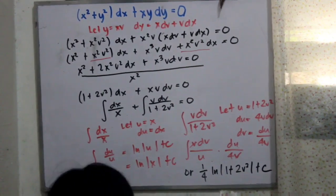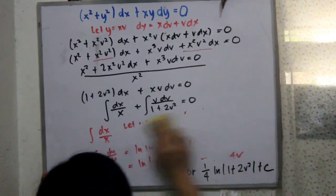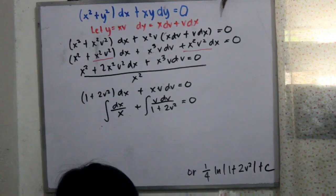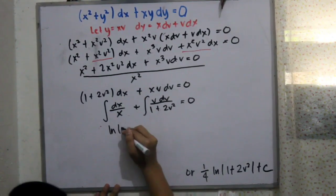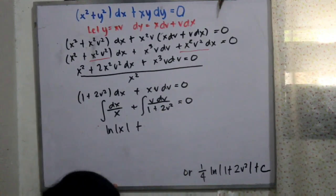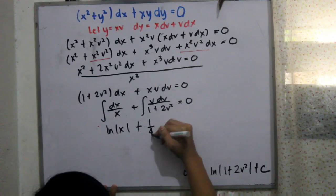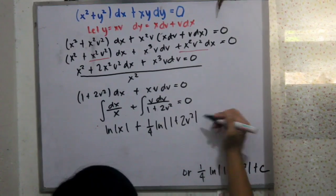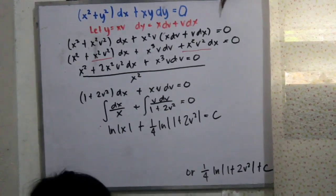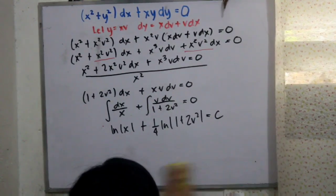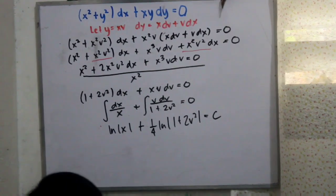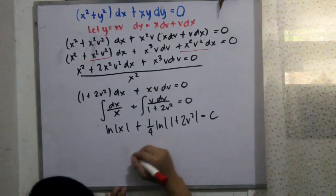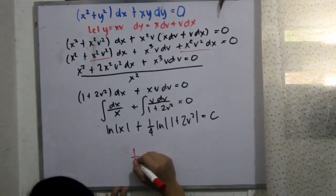Combining both integrals, we now have ln x plus one fourth ln of 1 plus 2v squared. Since we have a coefficient of one fourth, we need to use the rule of logarithms, as shown in other videos.